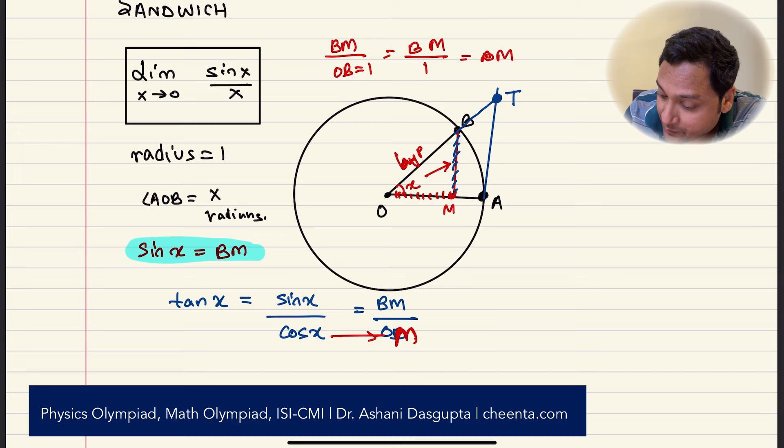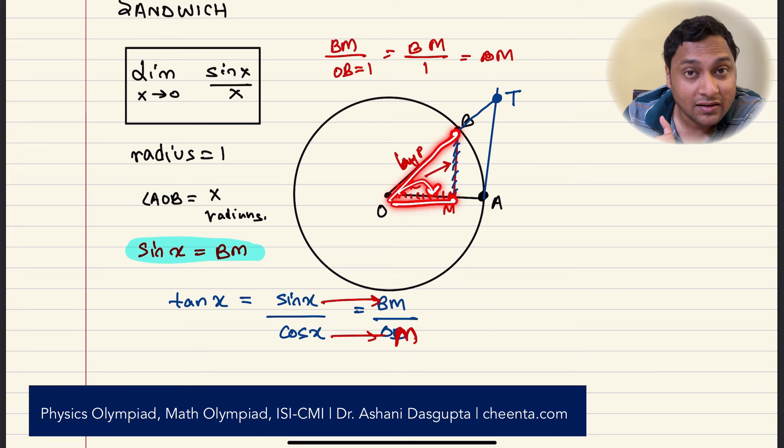In fact, this is a very important diagram that you should remember or you should think about. BM is the sine of x, the vertical, and OM is the cosine of x, the horizontal. Now, why is cosine of x OM? Because we know that cosine is adjacent by hypotenuse. Adjacent is again OM and hypotenuse is again 1. OM by 1. So it's OM. Remember, we are always working in this unit circle.